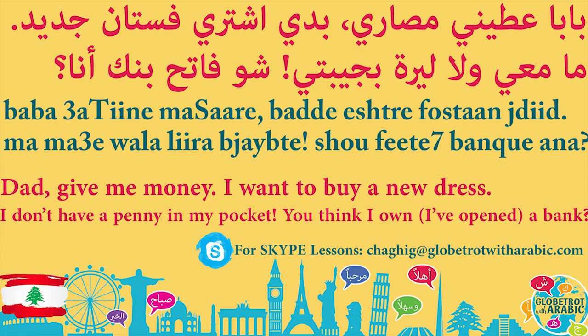Let's break it down. Baba means Dad. Ateene means give me. Masari means money. Dad, give me money. Ateene is the same for masculine and feminine. If you're talking to more than one person, you would say Atoone. Atee is the actual verb in the imperative form. The -ne at the end means me. Baba, ateene masari — Dad, give me money.